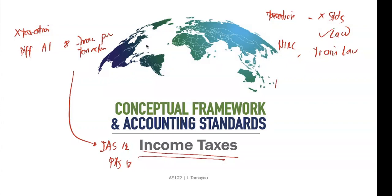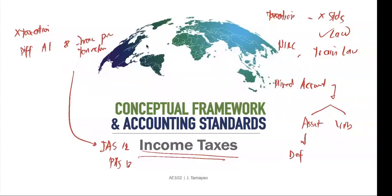Income taxes is also considered a mixed account. Why is it considered a mixed account? It is considered a mixed account because we can recognize an asset and we can recognize a liability. Before, we learned that in your IFRS-16 or PFRS-16, we can also recognize an asset and a liability. It is just the same here with your income taxes. We call the asset a deferred tax asset and the liability a deferred tax liability. So those are the items we need to learn — how do we account for a deferred tax asset and how do we account for a deferred tax liability?